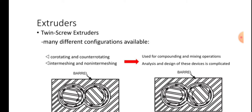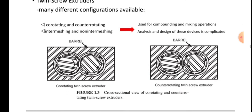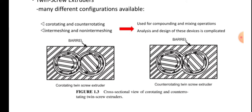Twin screw extruders have many different configurations available, including co-rotating and counter-rotating, as well as intermeshing and non-intermeshing types. They are used for compounding and mixing operations. The analysis and design of these devices is complicated. The figure shows the cross-sectional view of co-rotating and counter-rotating twin screw extruders.